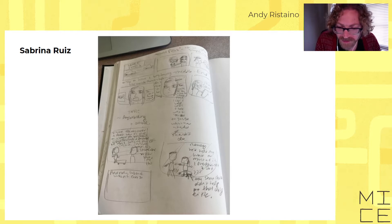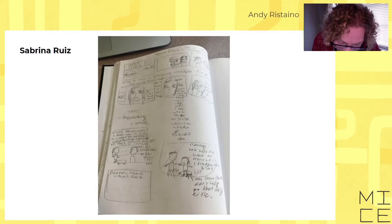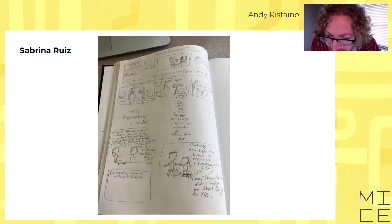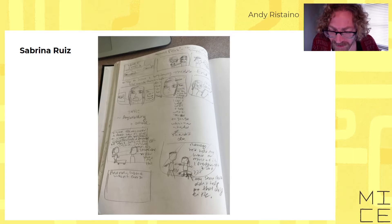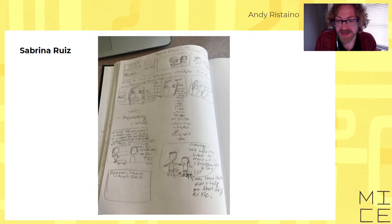This is from Sabrina Ruiz — it looks like going to the supermarket. It's in a sketchbook so it's a little hard to read. But I like that you've thrown down your ideas and put in the words. This is a great first pass and something you can look over and define more later.